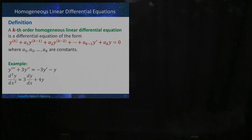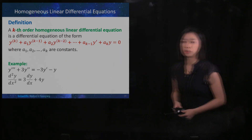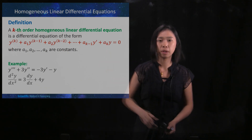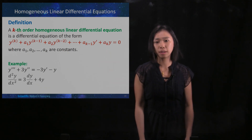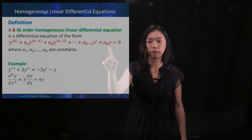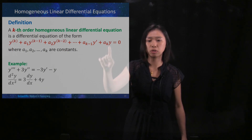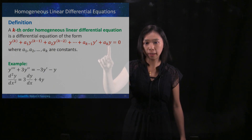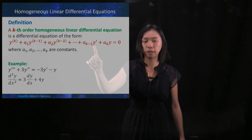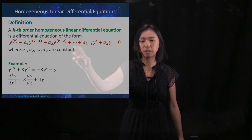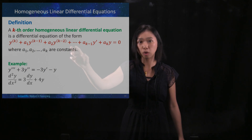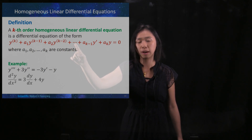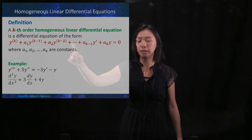A k-th order homogeneous linear differential equation is a differential equation of this form. Starting here, we have y, then y differentiated one time, and within the dot dot dot, it would be y differentiated two times, three times, four times, and so on.